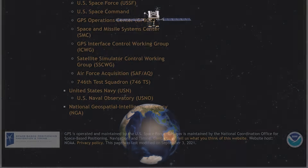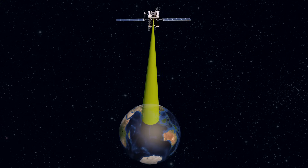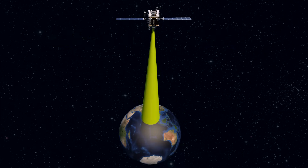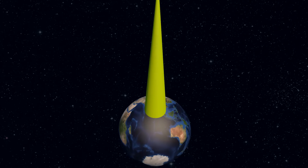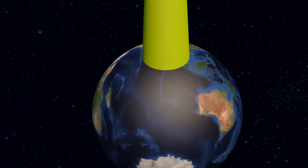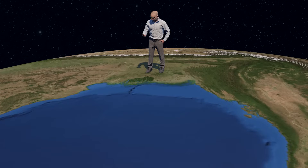And what is that data? Each satellite continuously transmits data which contains its precise location and the time at which this data is sent from the satellite. And the service of the satellite ends there. The rest is done by the small GPS-enabled device which you have with you.